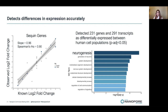A gene ontology analysis of genes upregulated in our differentiated neuron-like cells found that neurogenesis was the most associated term. This showed us that the technique finds biologically relevant changes in expression, as these differentiated cells were showing neuronal processes.